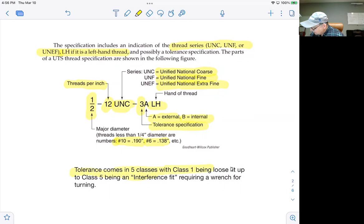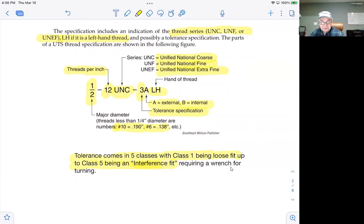Tolerance comes in five classes, class one being a loose fit, the loosest of all fits, and class five being what's called an interference fit, meaning it is so tight that it requires a wrench for turning. Class two or three is the most common.